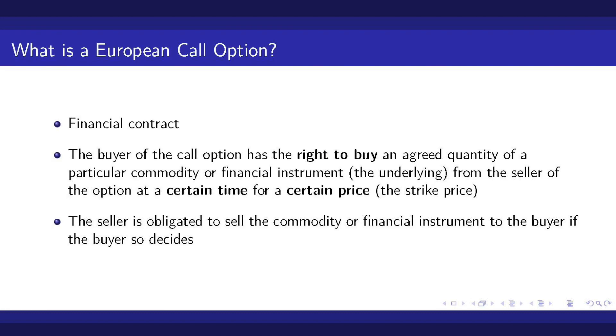So first of all, what is a European call option? It is a financial contract between two parties, the buyer and the seller of this derivative. The buyer of the call option has the right, but not the obligation, to buy an agreed quantity of a particular underlying asset from the seller of the option at a certain time for a certain price. If the buyer decides to exercise the option, which means to actually buy the underlying at the agreed time, the seller is obligated to sell the commodity or financial instrument to the buyer.